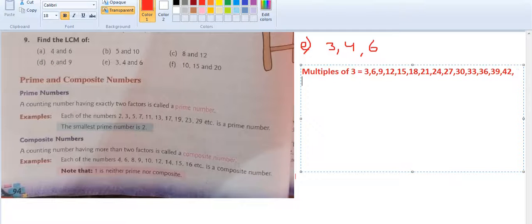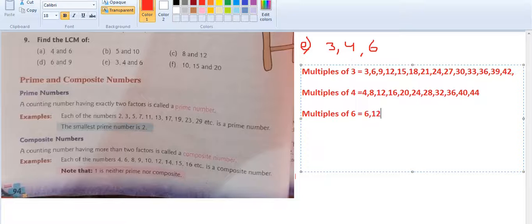Multiples of 4: 4, 8, 12, 16, 20, 24, 28, 32, 36, 40. Multiples of 6: 6, 12, 18, 24, 30, 36.